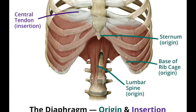Then we have the sternal part. This is the sternum, and the sternal part arises from the posterior surface of the sternum. It's the anterior picture here, so you need to look at the back side to find the origin of the sternal part of the diaphragm on the posterior surface of the sternum.